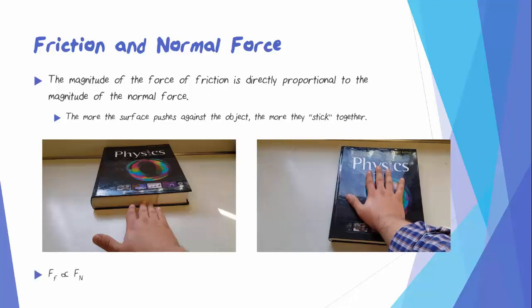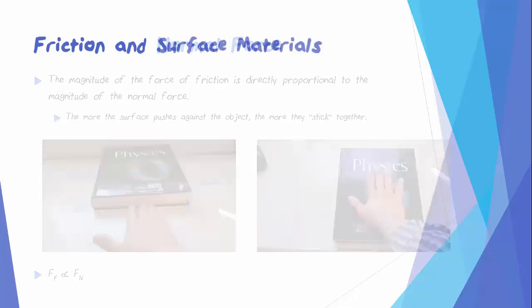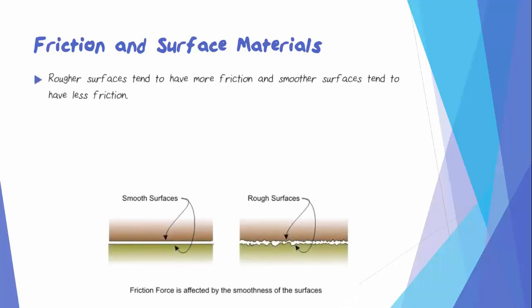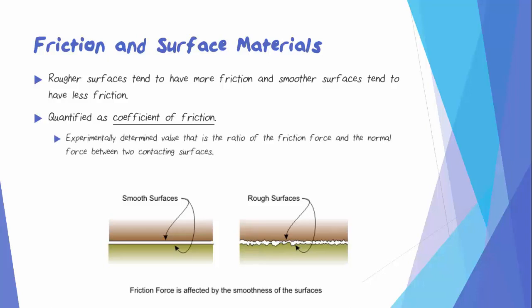We can write that FF is proportional to FN. The force of friction also depends on what the materials are made of. Rougher surfaces tend to have more friction, and smoother surfaces tend to have less friction. This is quantified as the coefficient of friction, which is an experimentally determined value that is the ratio of the friction force and the normal force between two contacting surfaces.